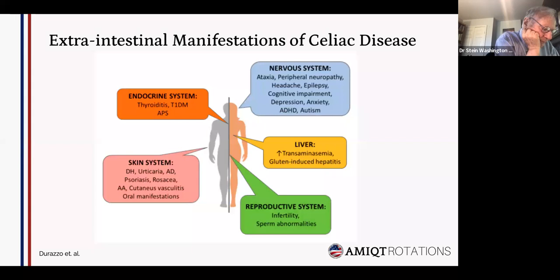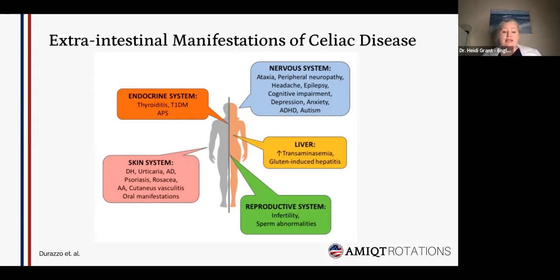So some of the extra-intestinal manifestations of celiac. The classic celiac, as we said, involves gut symptoms: abdominal pain, bloating, diarrhea, constipation, weight loss. Some of the extra-intestinal manifestations affect the endocrine system, skin, reproduction, and liver. What I'm going to be focusing on today is the nervous system.